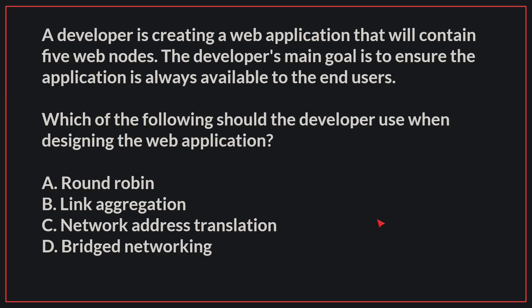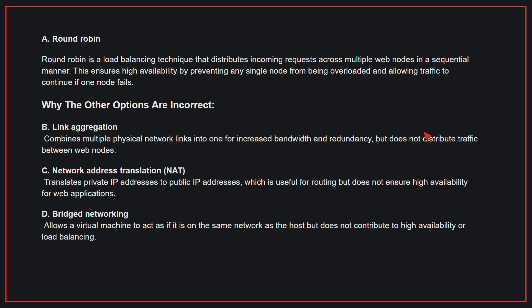A developer is creating a web application that will contain five web nodes. The developer's main goal is to ensure the application is always available to end users. Which of the following should the developer use when designing the web application? The correct answer is A, round robin. Round robin is a load balancing technique that distributes incoming requests across multiple web nodes in a sequential manner, ensuring high availability by preventing any single node from being overloaded and allowing traffic to continue if one node fails.